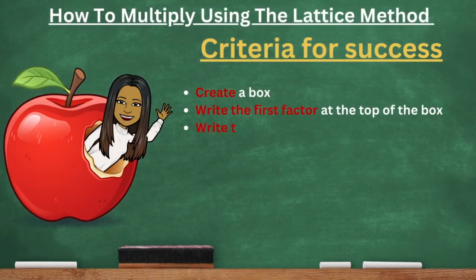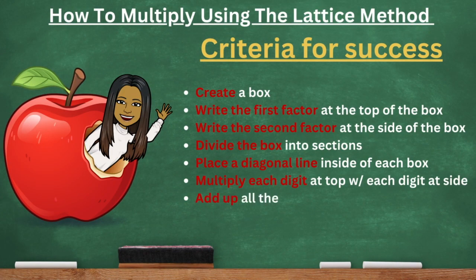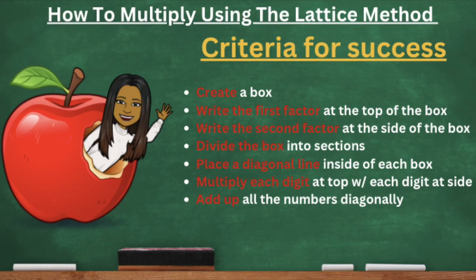In today's class, you guys are going to learn how to multiply using the lattice method. So you have your criteria for success in front of you. It says you have to create a box, write the first factor at the top of the box, write the second factor at the side of the box, divide the box into sections, place a diagonal line inside of each box, multiply each digit at the top with each digit at the side, then add up all the numbers diagonally.